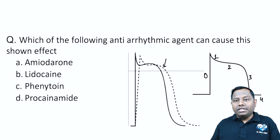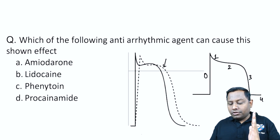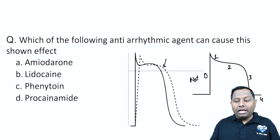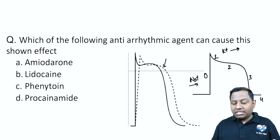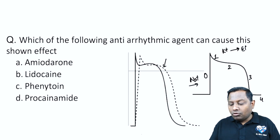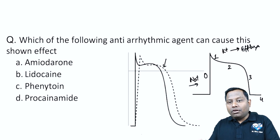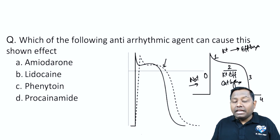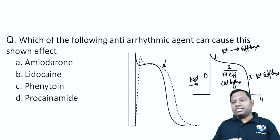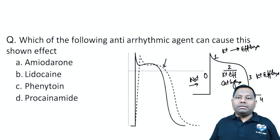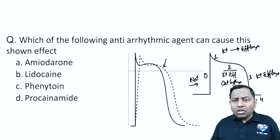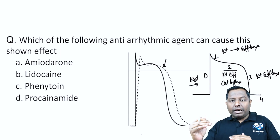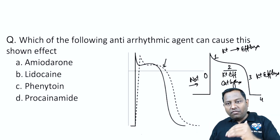Each phase has a different ionic basis. Phase 1 is mainly due to sodium influx. Phase 2 is due to potassium efflux and calcium influx — potassium goes out and calcium comes in to neutralize. Phase 3 is only potassium efflux. Phase 4 is the resting membrane potential, approximately minus 90 mV.